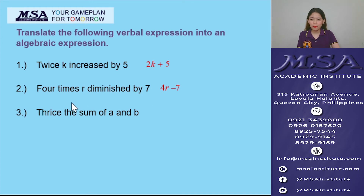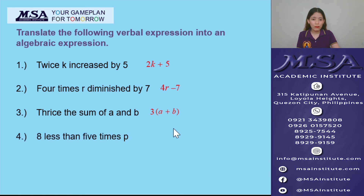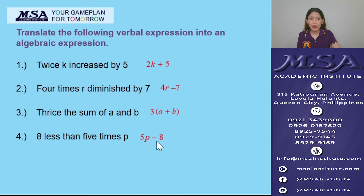Number 3: 'Thrice the sum of a and b.' Thrice means times 3, and sum means addition, so the sum of a and b is a plus b. Therefore, the translation is 3 times the quantity of (a plus b), written as 3(a + b). Number 4: '8 less than 5 times p.' 5 times p is 5p, and 'less than' means subtraction with a flipped order. So the translation is 5p minus 8.